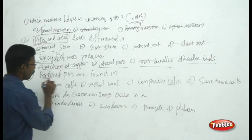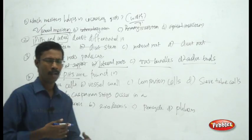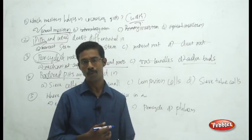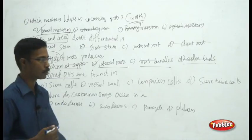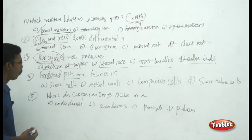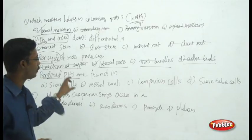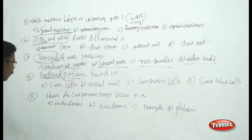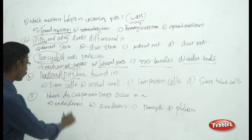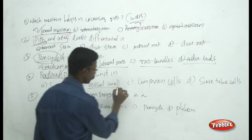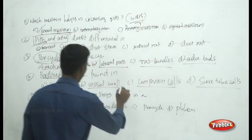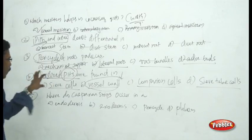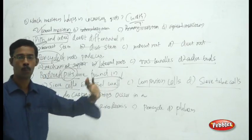Next question: bordered pits are found in which structure? In this chapter you will often get direct morphological feature questions. The question asks which type of cell or structure has these pits. The choices are sieve cells, vessel walls, companion cells, and sieve tube cells. Only vessel walls have bordered pits — the answer is vessel walls.